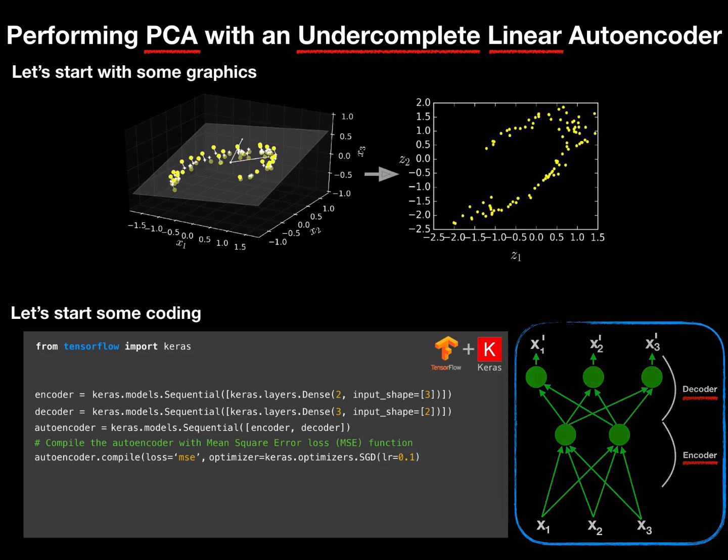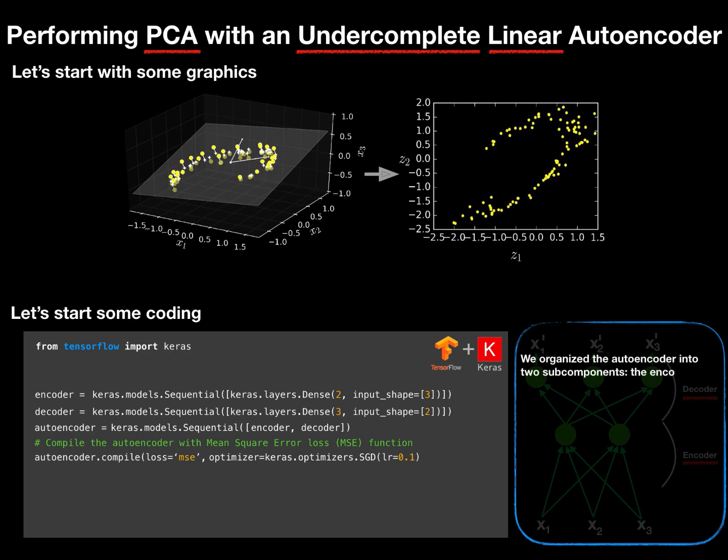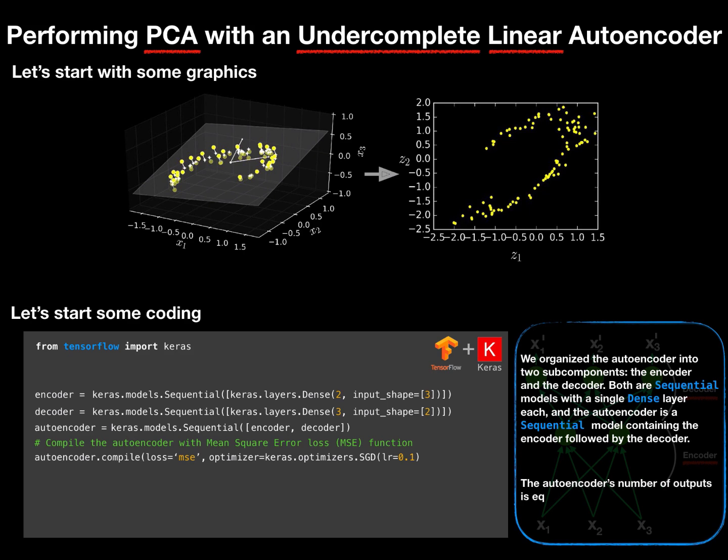That is simple. We can quickly summarize what we did so far. We organized the autoencoder into two subcomponents: the encoder and decoder. Both are sequential models with a single dense layer each. And the autoencoder is a sequential model containing the encoder followed by the decoder. The autoencoder's number of outputs is equal to the number of inputs, and in our case equals 3. And the last point in this list: to perform a simple PCA, we do not use any activation function, and the cost function is the mean squared error.